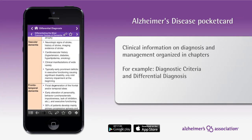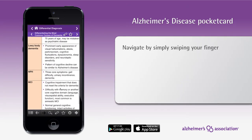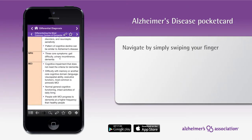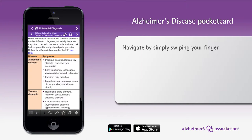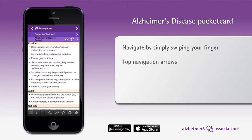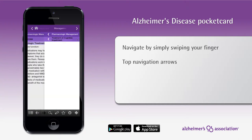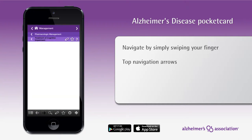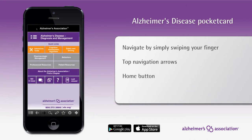Navigating through this app is quick and efficient. Simply scroll up and down on a current page, or swipe forward or back to see the previous or next relevant subtopic or content. You can also use the top navigation arrows to toggle between main topics and subtopics. Click the home button at any time to go back to the major entry points.